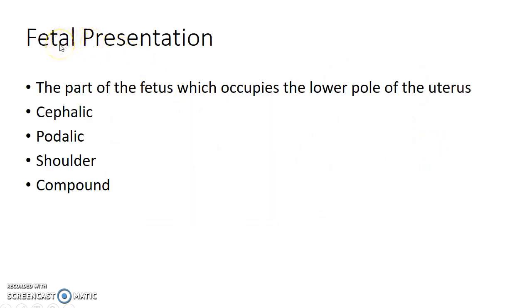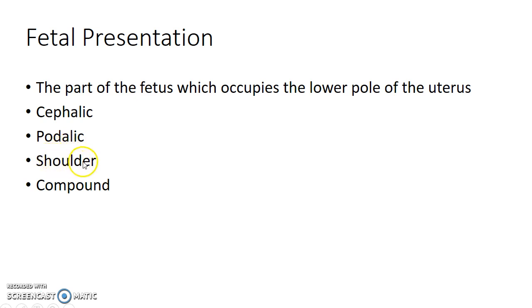Now coming to fetal presentation: the part of the fetus which occupies the lower pole of the uterus is known as presentation. The different types are cephalic presentation when the head occupies the lower pole of the uterus, podalic presentation when the lower limb occupies the lower pole of the uterus, shoulder presentation, and compound presentation when more than one part of the fetus occupies the lower pole of the uterus.